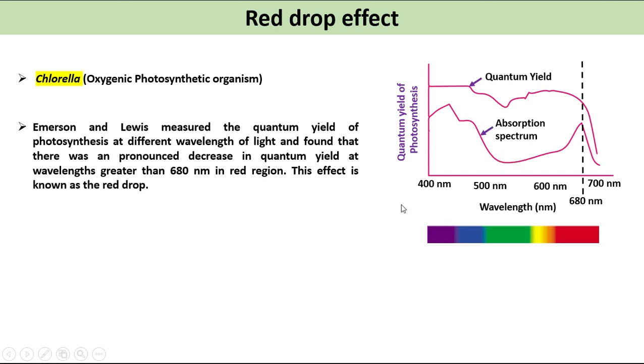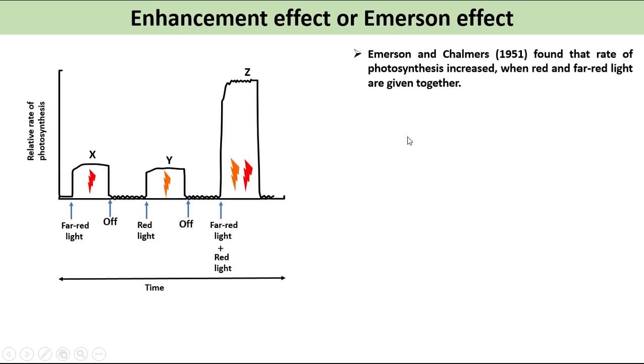Enhancement effect or Emerson effect: Emerson and Chalmers in 1951 found that rate of photosynthesis increased when red and far-red light are given together, as we can see in this graph.